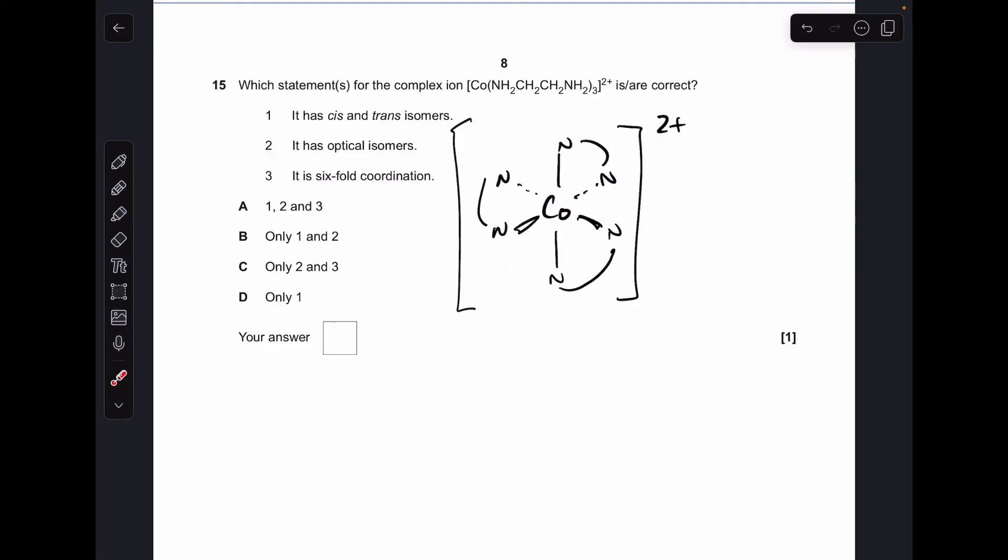Moving on to number 15. So I'll just use this simplified diagram of the complex to explain these. So does it have cis-trans isomers? No, it can't, because all the ligands are exactly the same. So that one's wrong. It has optical isomers. So that one's correct, because the mirror image of this isn't superimposable onto this. And statement three is correct because it does have sixfold coordination. Coordination number's all about the number of coordinate bonds going to the central metal ion, and there are six. So that was correct. So two and three right, C.